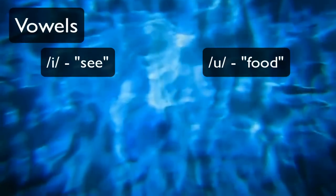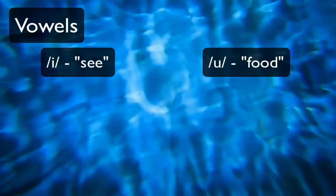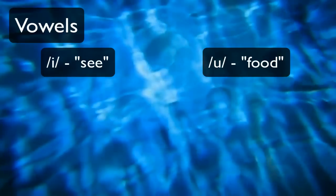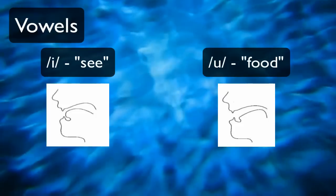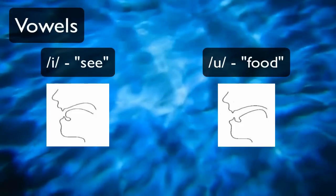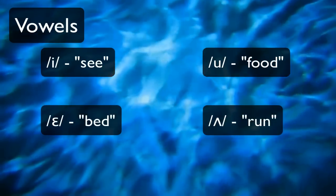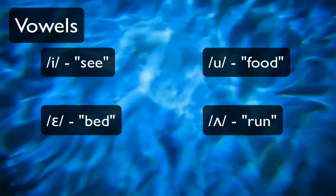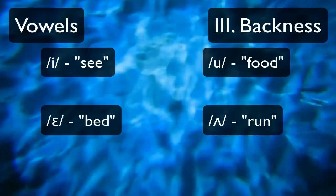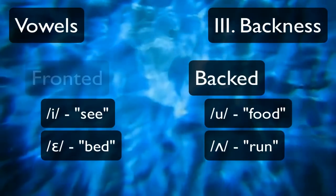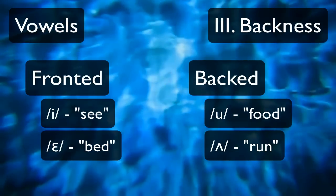Now start paying attention to your tongue and compare E and U — go back and forth between them. You should start to notice that the back of your tongue pulls back around a centimeter for U and goes forward for E. You get the same effect with UH and EH, although the tongue will move back a little less between these two. As you might have guessed, this is vowel backness. OO and UH are backed vowels, and E and EH are fronted vowels. At this point, we have the vocabulary we need to talk about vowels and look at the vowel chart for English.